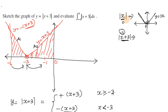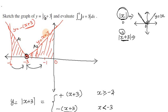To recap: for y equal to modulus of x, if we add plus 3, the vertex shifts so that x plus 3 equals 0, meaning x equals minus 3 is where the vertex sits. The right side of minus 3 is the positive function, and the left side is the negative function. For example, substituting 0: x plus 3 equals 3, which is positive. Substituting minus 5: minus 5 plus 3 equals minus 2, which is negative.